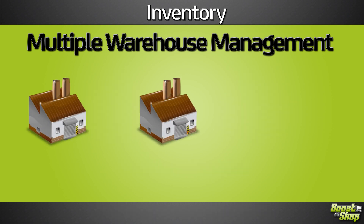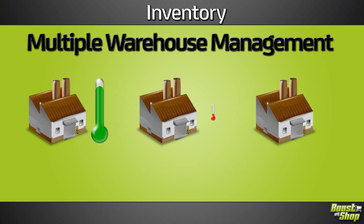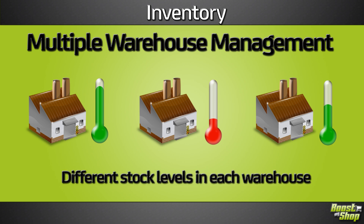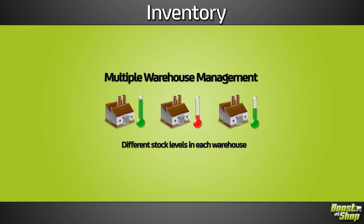Once you have configured your warehouses, ERP will use the different stock levels in each warehouse to define the product availability and sellable quantities.